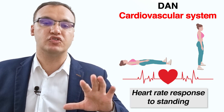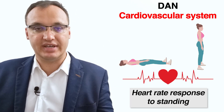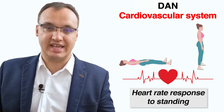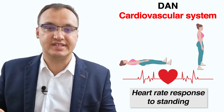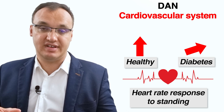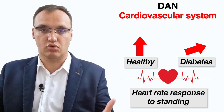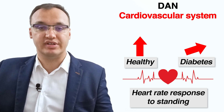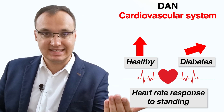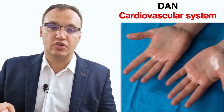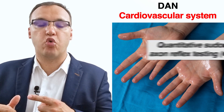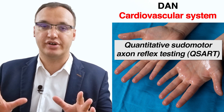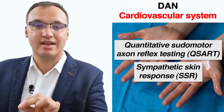The heart rate response to standing test evaluates the cardiovascular response caused by a change from horizontal to vertical position. In healthy people, there is a characteristic rapid increase in heart rate in response to standing. In patients with diabetes and autonomic neuropathy, there is only a gradual increase in heart rate — that is the difference between a diseased patient and a healthy one. There are also other tests for heart function, such as quantitative pseudomotor axon reflex testing and sympathetic skin response.